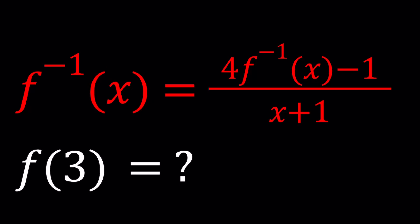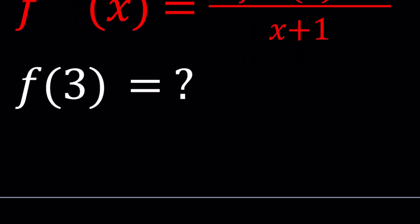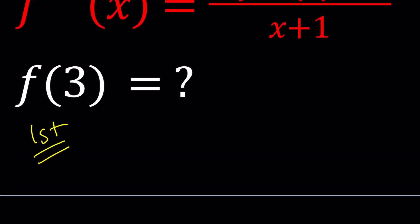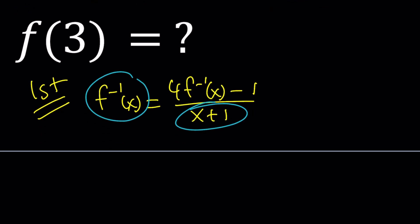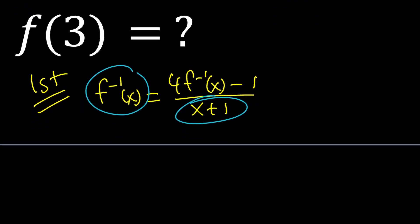I'll be presenting two methods and let's start with the first one. For my first method, I'm going to solve for f inverse. Since we're given an equation, we can go ahead and cross multiply here, multiply these two things, and that's going to equal 4 times f inverse of x minus 1. So x plus 1 multiplied by f inverse of x equals 4 times f inverse of x minus 1.